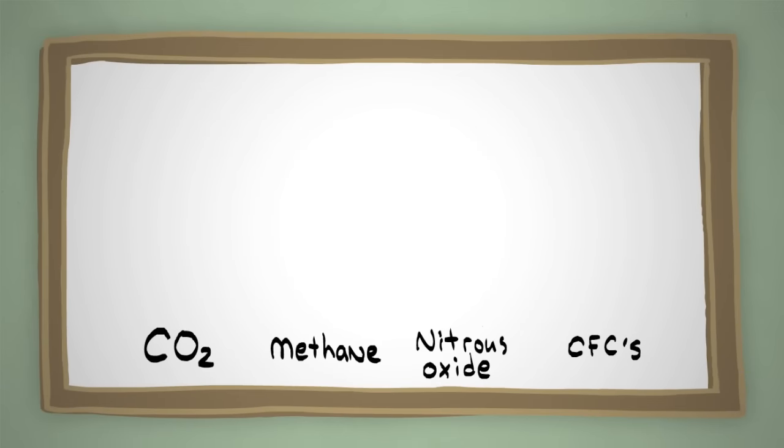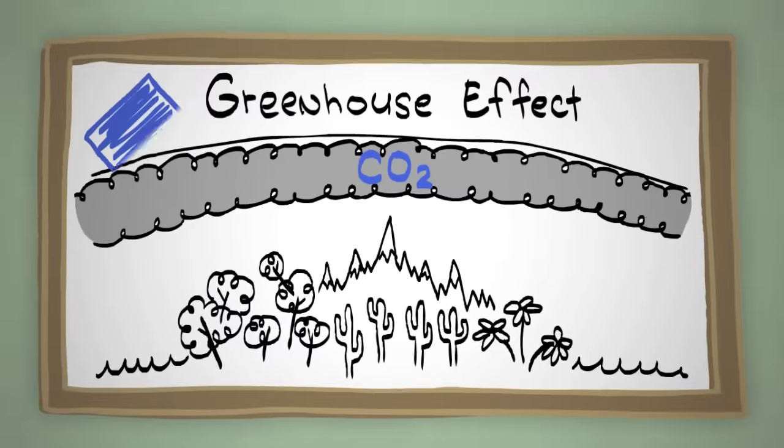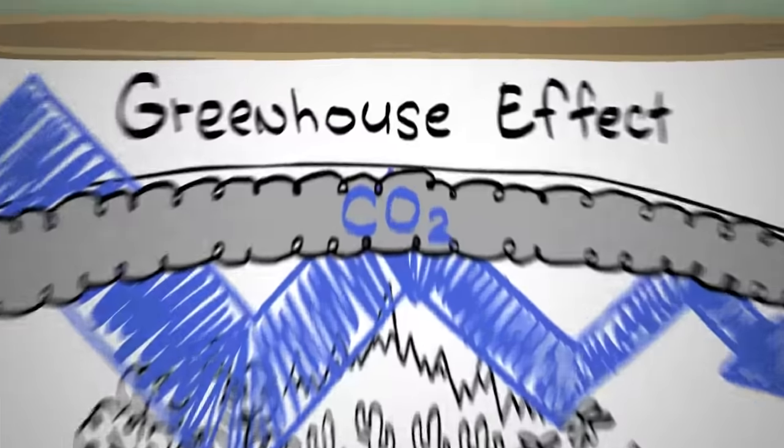Scientists now know that excess carbon dioxide and some other gases in smaller amounts are preventing heat from escaping, and this is warming up the planet. They call it the greenhouse effect.